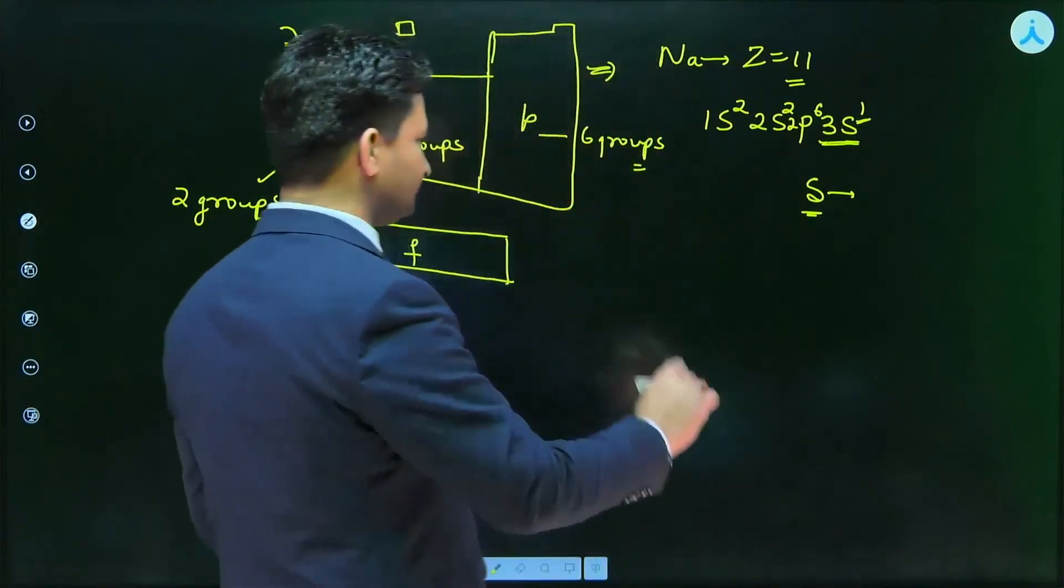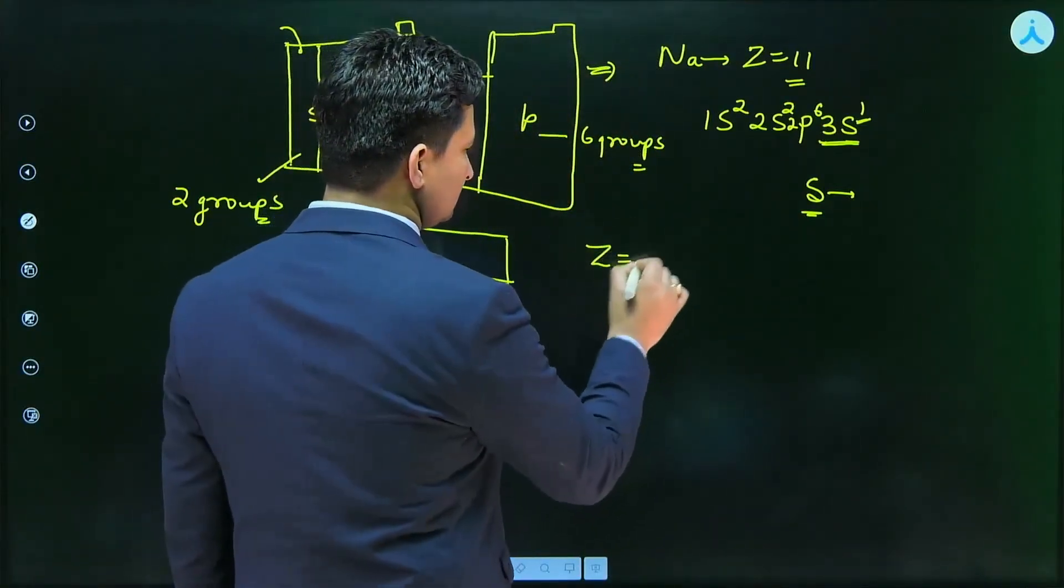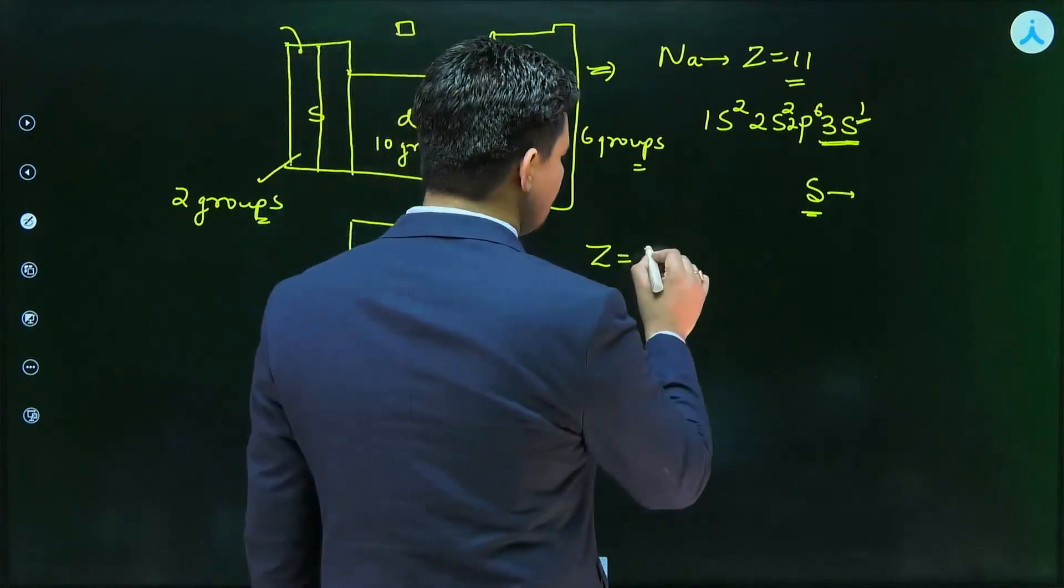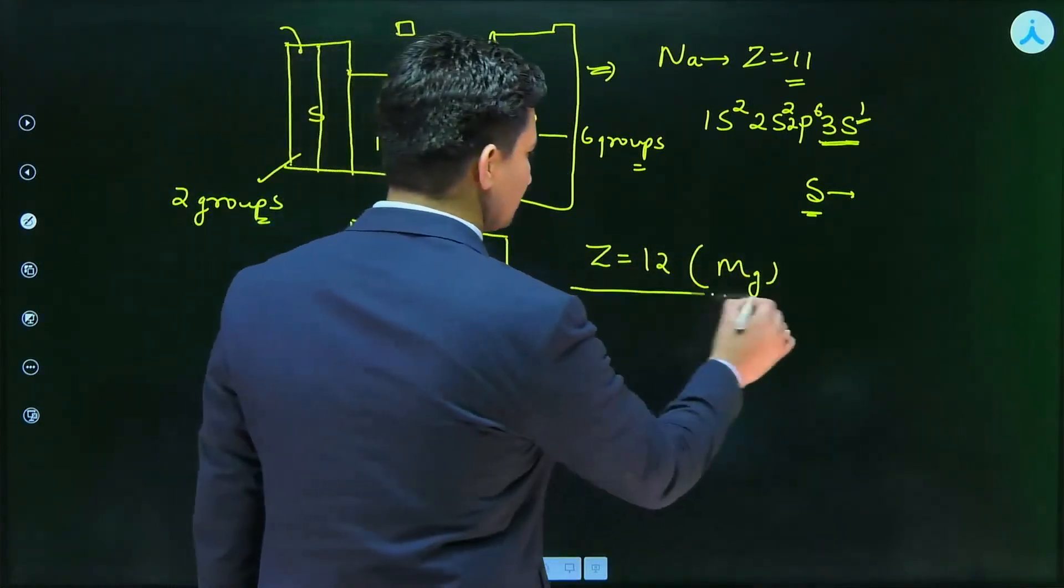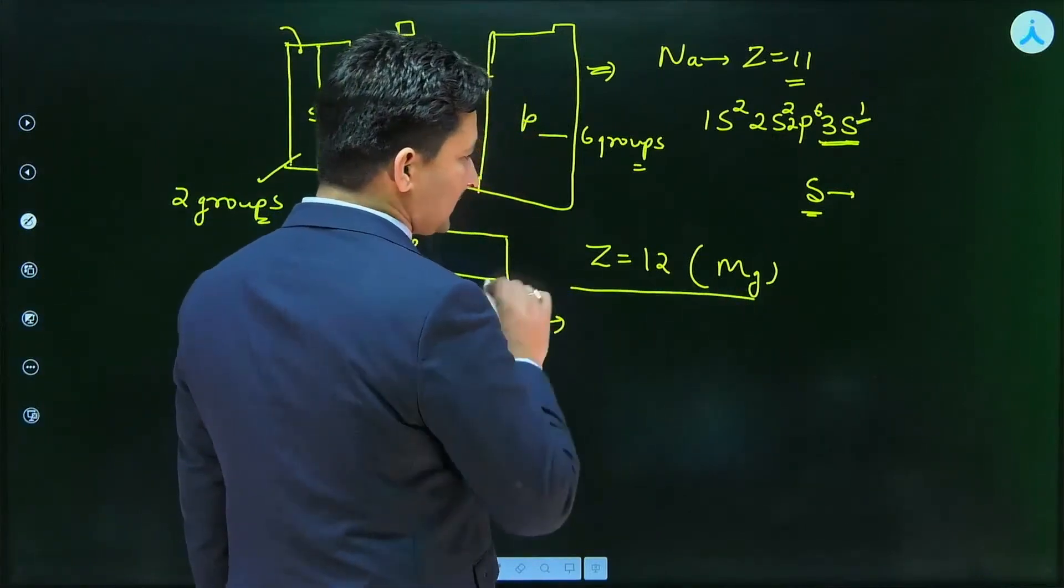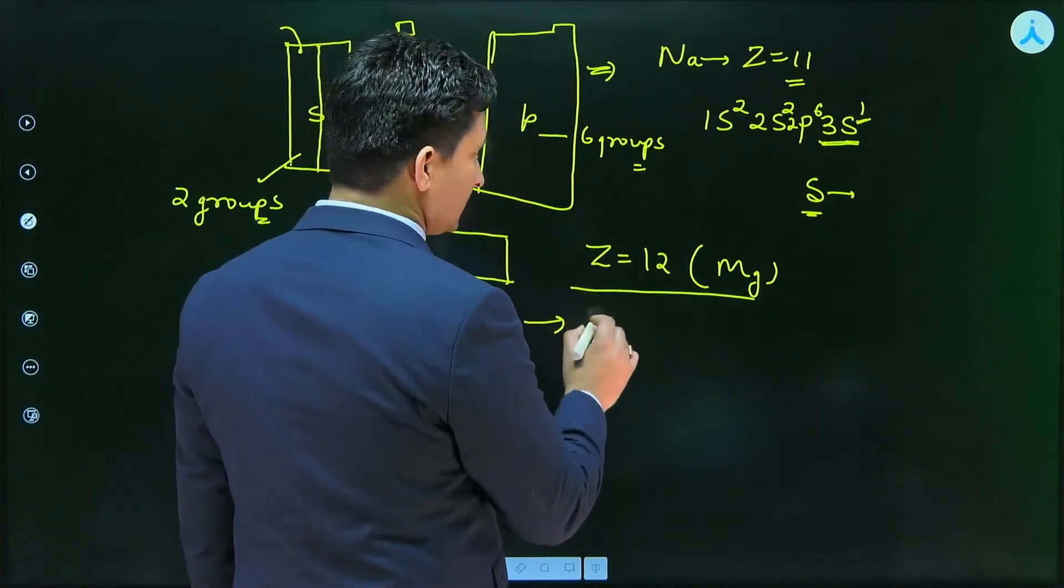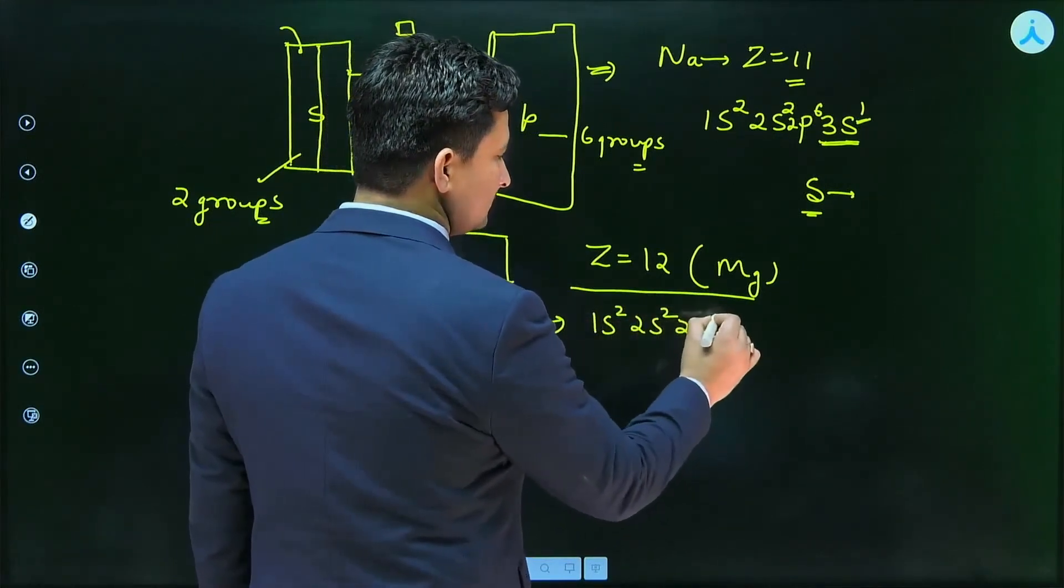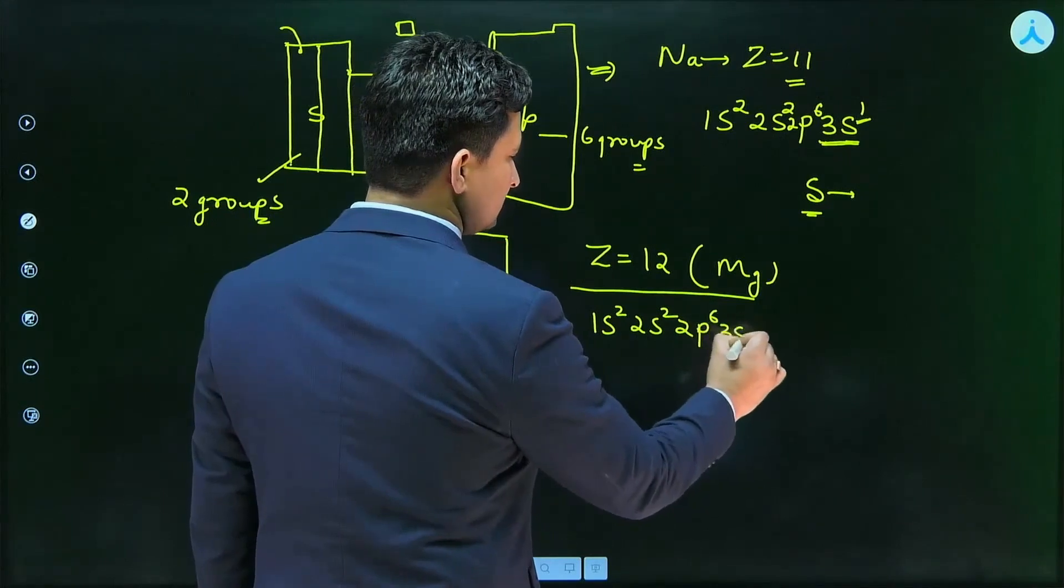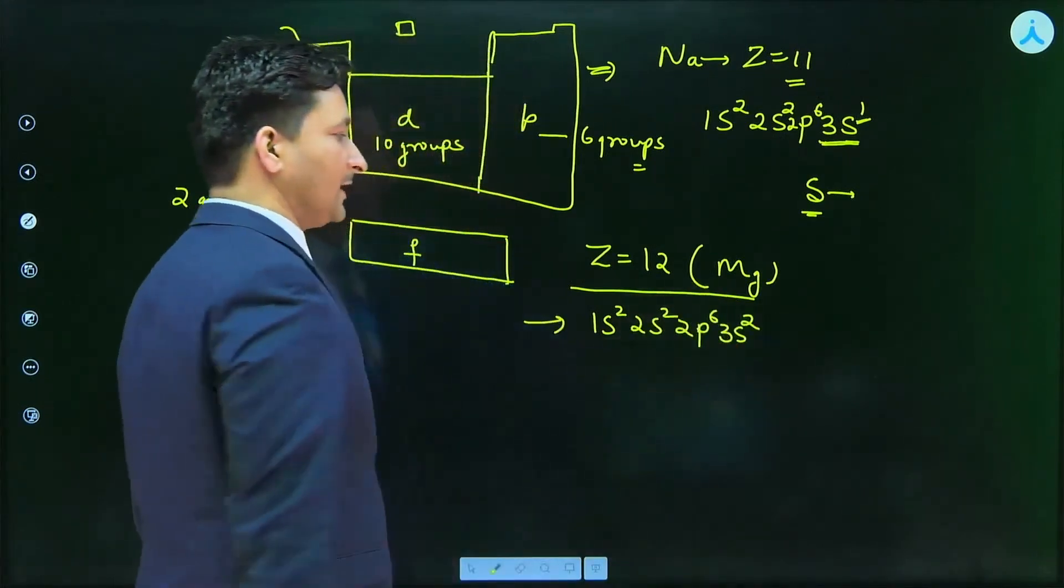I will show you a simple example. 12 is Magnesium. In the case of Magnesium, when we write its electronic configuration, its electronic configuration is 1s2, 2s2, 2p6, and 3s2. So total 12 electrons are there.